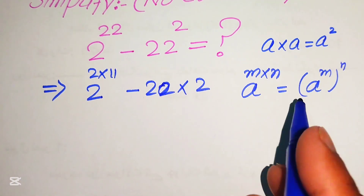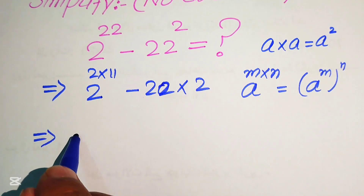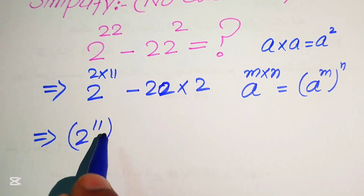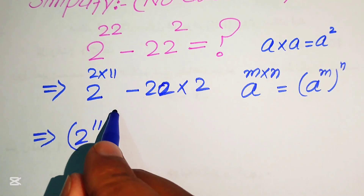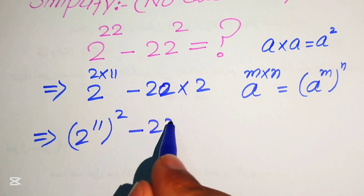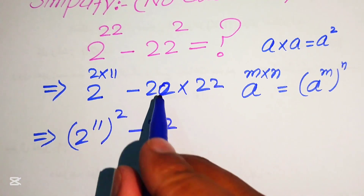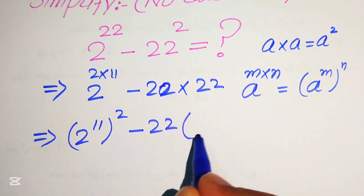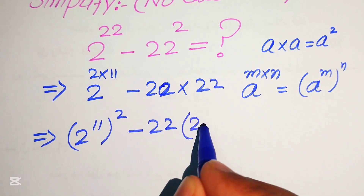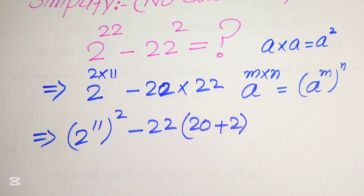According to this exponent law, we write our first term as 2 to the power of 11, whole squared. For the second term, 22 squared becomes 22 multiplied by 22, and we write this 22 as 20 plus 2.